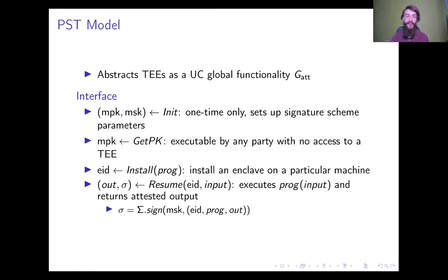At first the manufacturer can initialize the functionality by producing some public parameters. And each party within the protocol, regardless of their access to trusted execution environment machines, can get the master public key. Then, for a machine that does have access to a TEE, they are able to install a program on the machine, which generates a unique enclave ID. Or they can resume an enclave, addressed by its enclave ID, by giving it some input. This executes the program for the specific input and returns both an output value and a signature sigma, which corresponds to attestation.